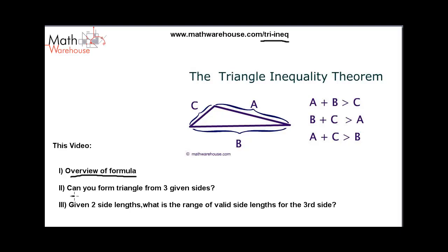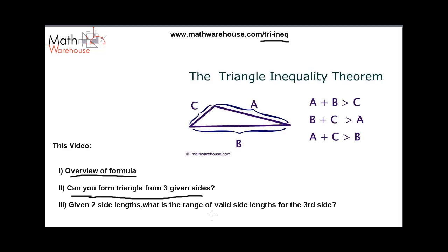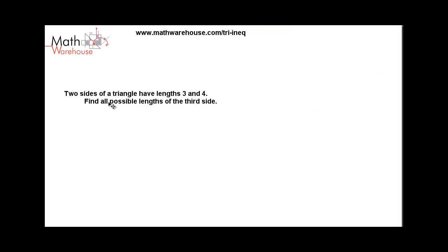We're going to look at two types of problems. The first kind: if I give you three sides, could those sides make up a triangle? Something like this — could a triangle have side lengths of 4, 8, and 2? By the end of this tutorial, that problem will be a piece of cake. Then we'll wrap up with questions like: if I gave you two side lengths, what are all the different values the third side might have? For example, if two sides of a triangle are 3 and 4, what are all the possible values of the third side?